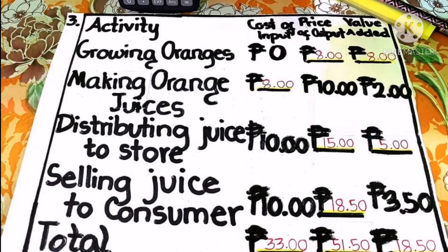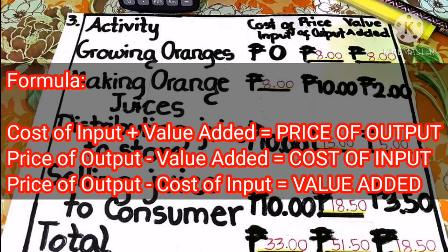For the totals: cost of input is 33 pesos, price of output is 51.50, and value added is 18.50. To summarize the formulas: price of output = cost of input + value added; cost of input = price of output − value added; and value added = price of output − cost of input.